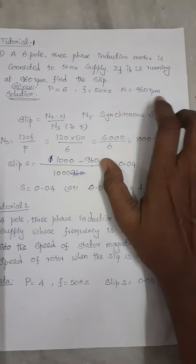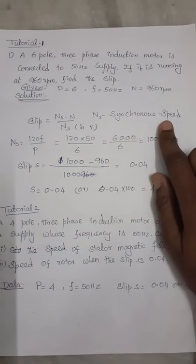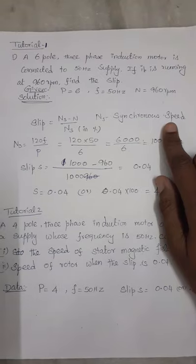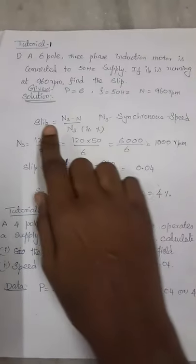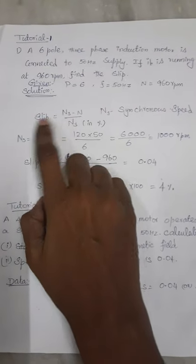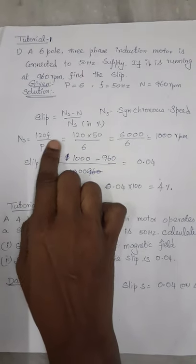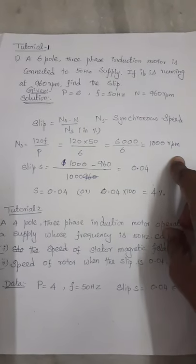Ns is the synchronous speed we need to find to substitute in the slip equation, where Ns is equal to 120f by P. While substituting the values you will get synchronous speed 1000 RPM.